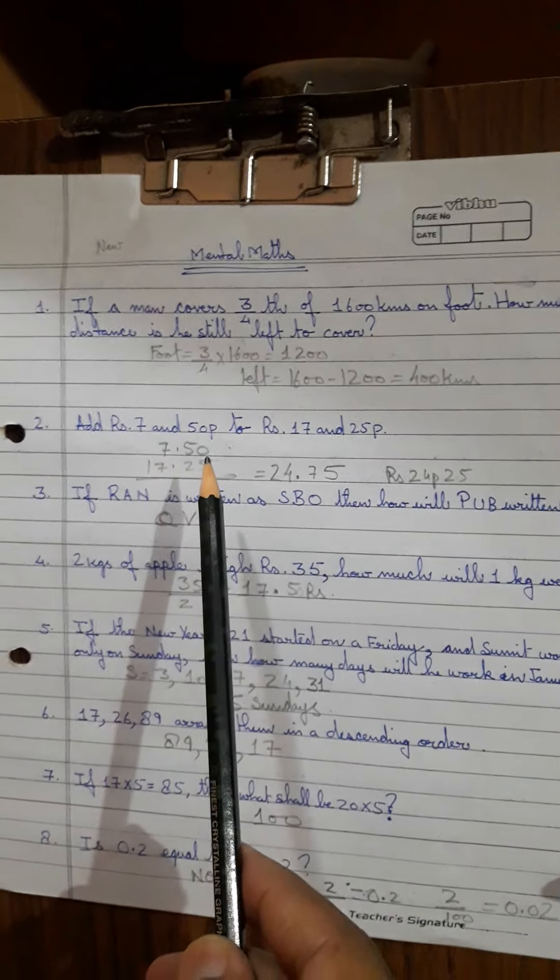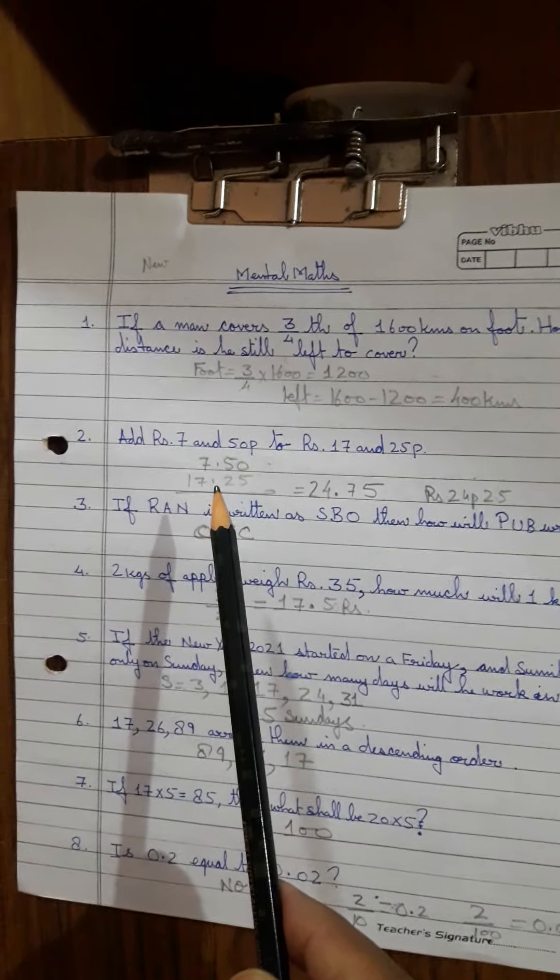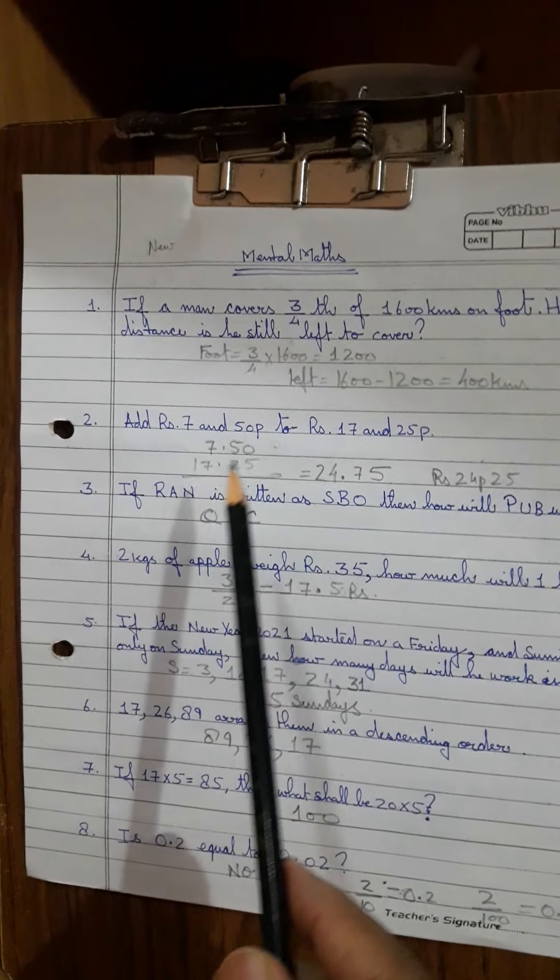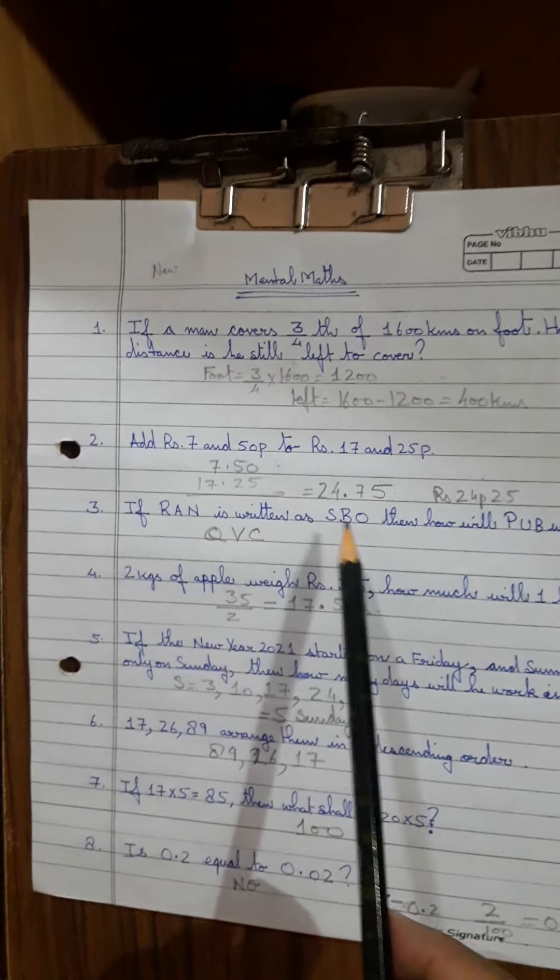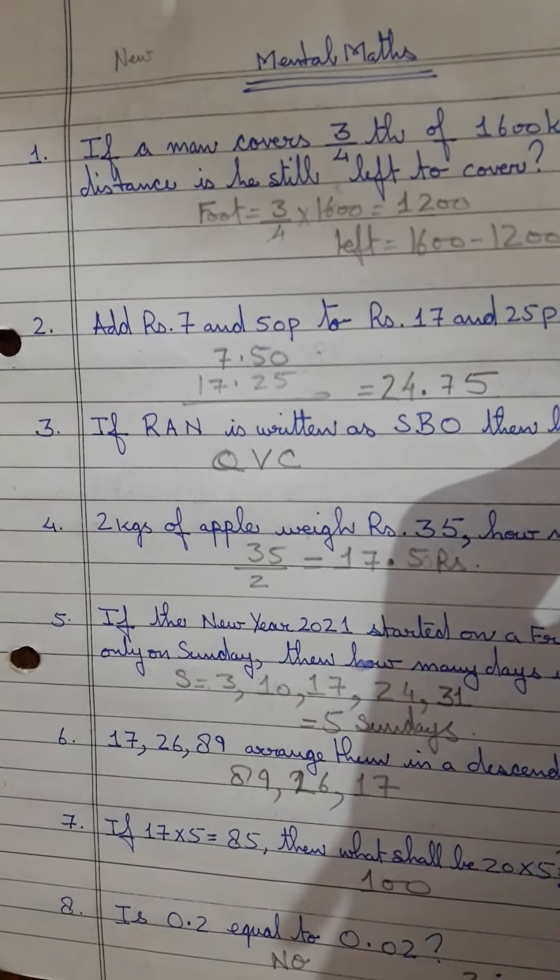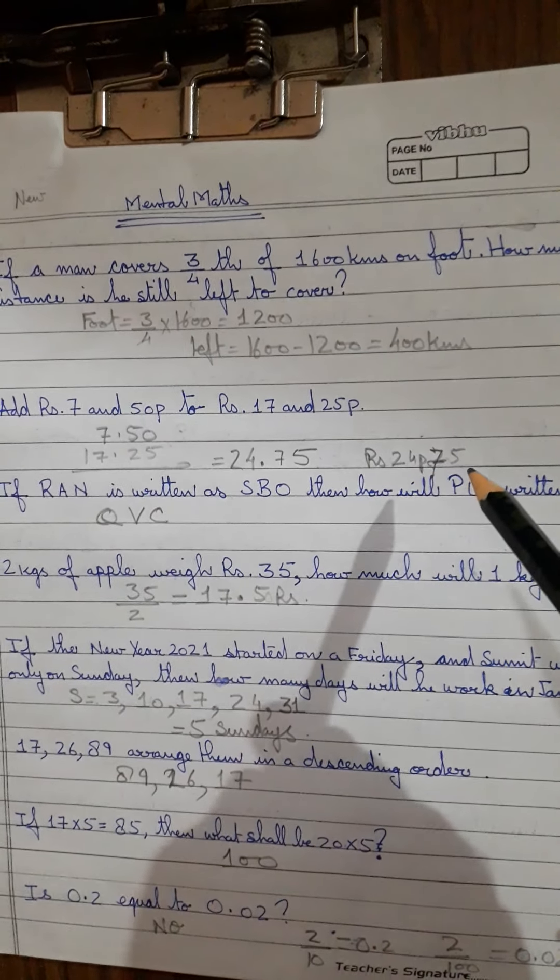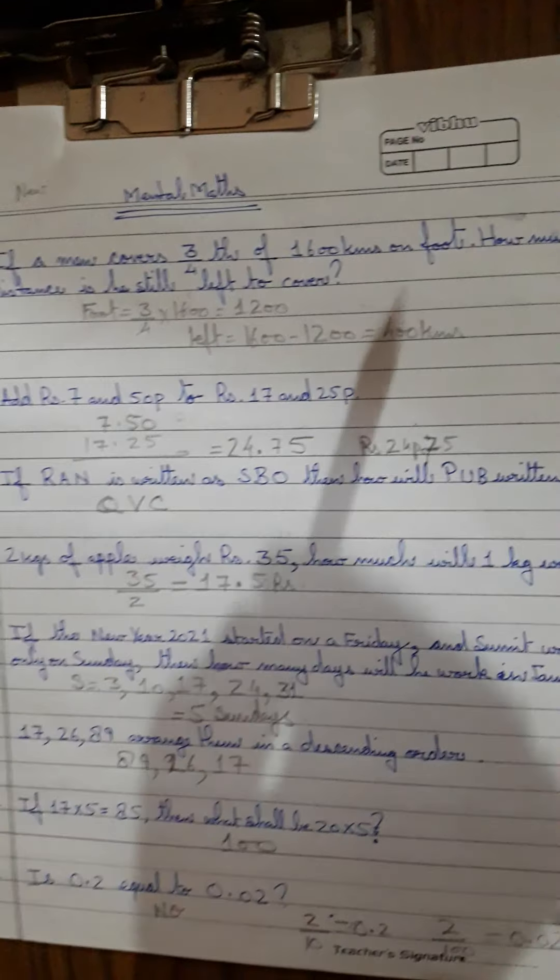Add this, just add simple, 50 and 25 is 75 paise, 1 carry it forward. 7 plus, 17 plus 7 is 24, so 24 rupees and 75 paise. 24 rupees and 75 paise is your answer, 24.75. So 24 rupees and 75 paise is your next answer.